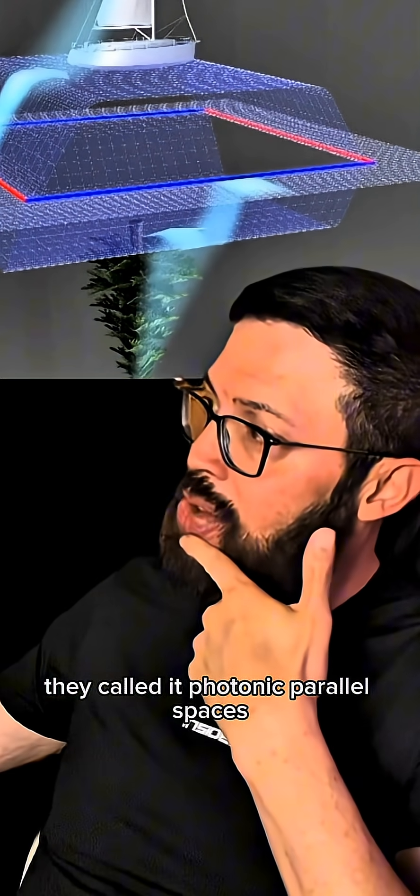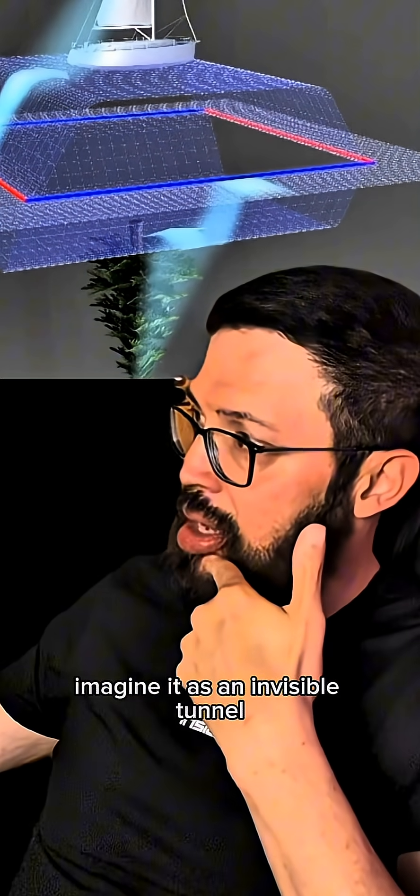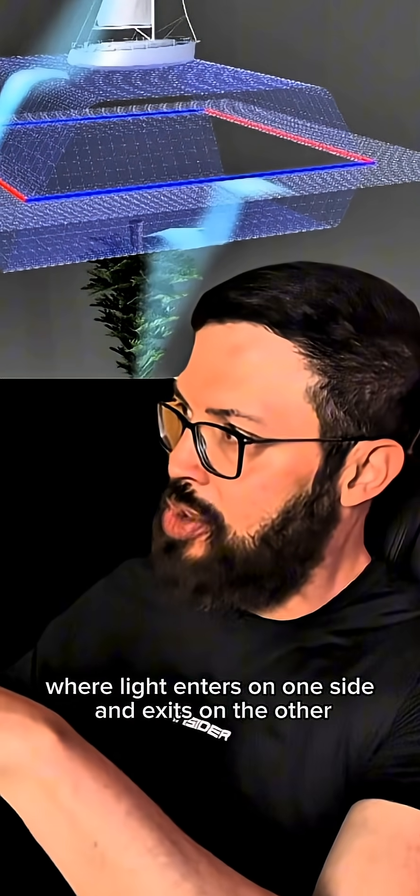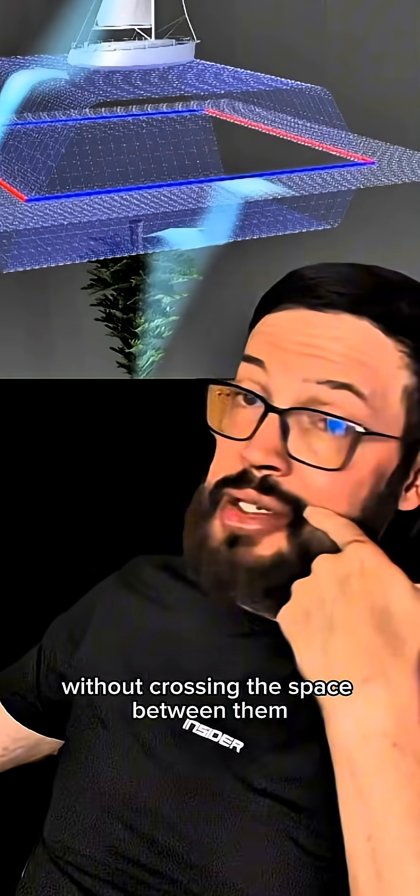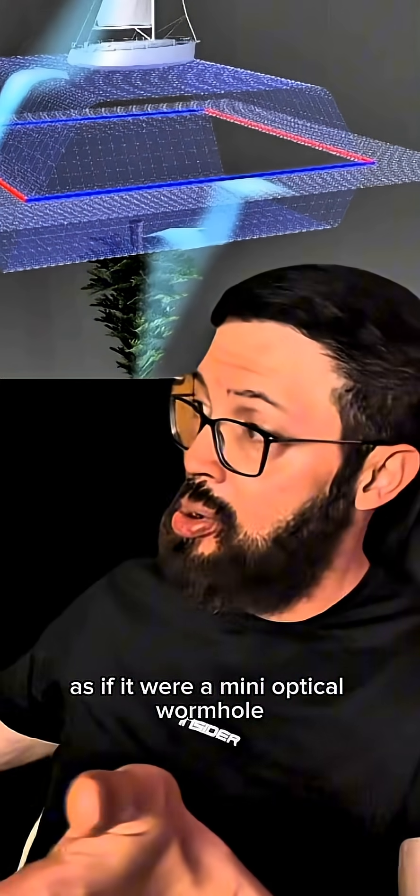They called it photonic parallel spaces. Imagine it as an invisible tunnel, where light enters on one side and exits on the other without crossing the space between them, as if it were a mini optical wormhole.